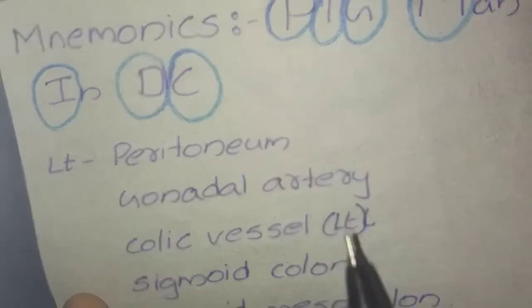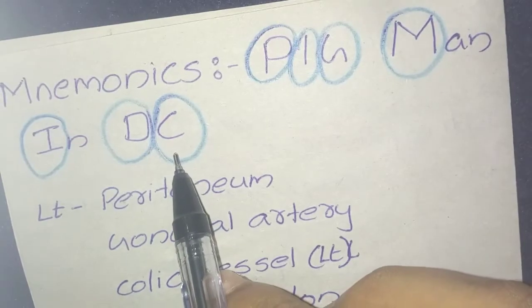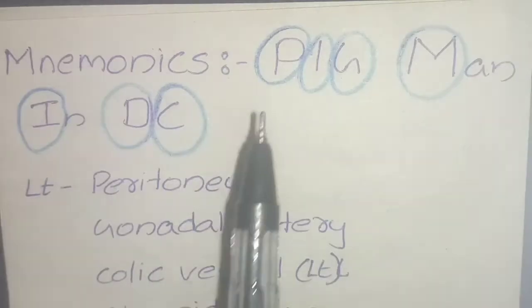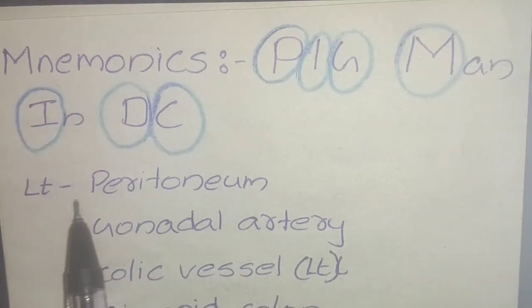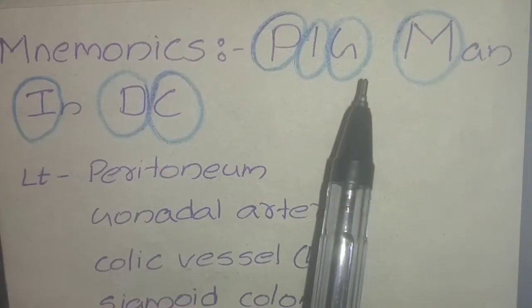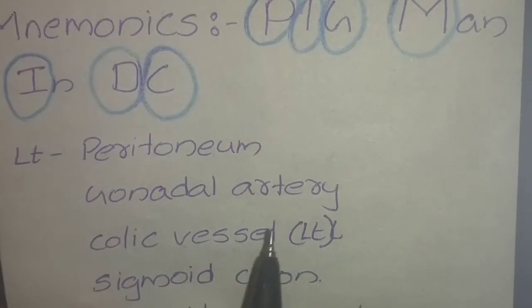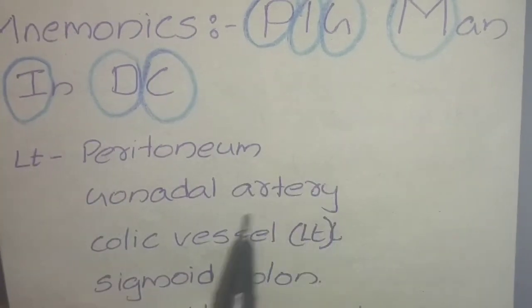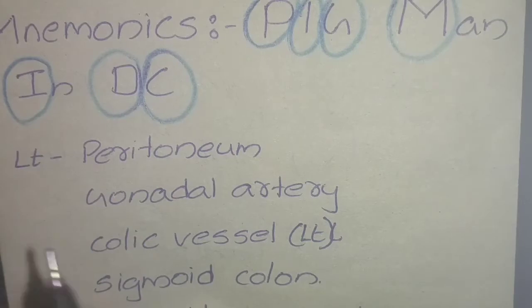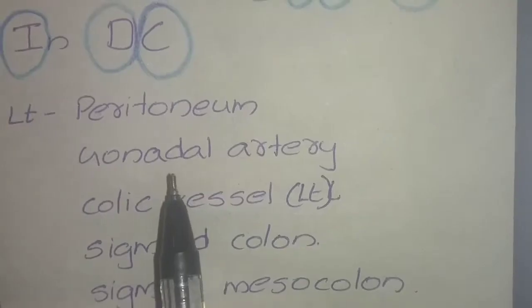For the left side, remember PGC from the same mnemonic: P for peritoneum, G for gonadal artery, and C for the left colic vessel. Additionally, the sigmoid colon and sigmoid mesocolon should be added as extra relations on the left side.